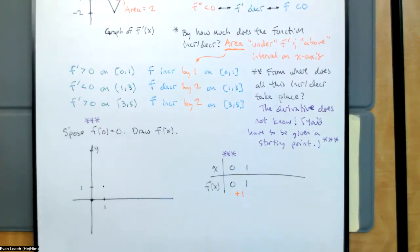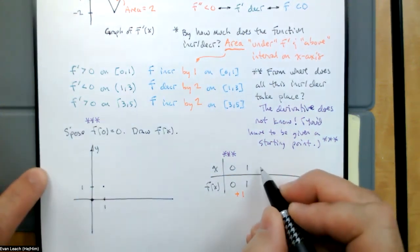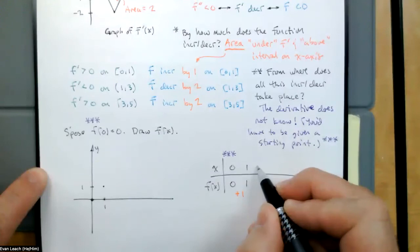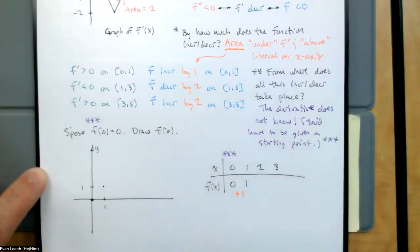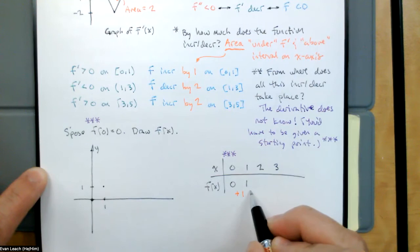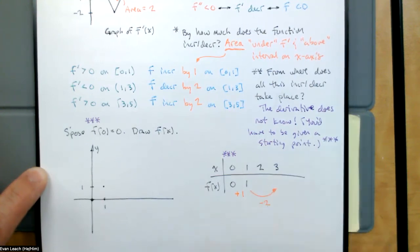But then on the interval from 1 to 3, we know that the function is decreasing by two. At 3, we know the function decreases by two.